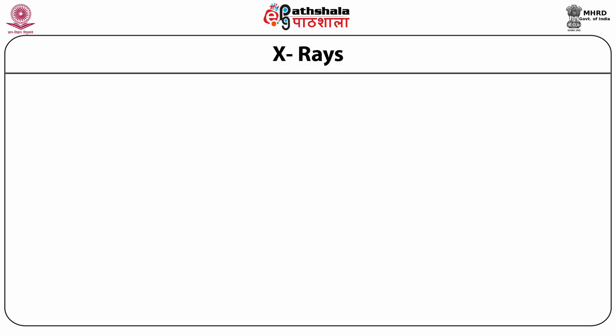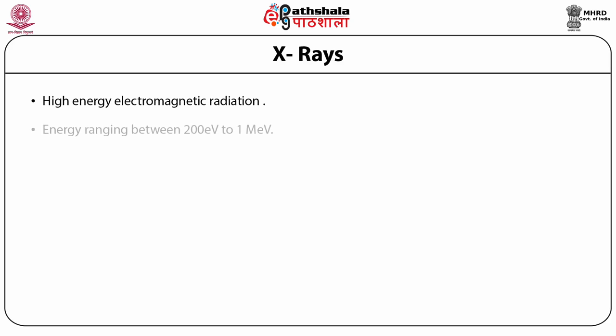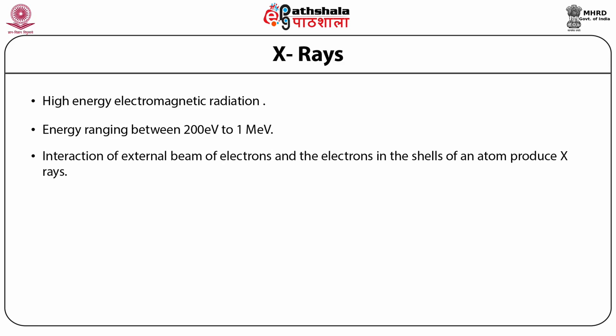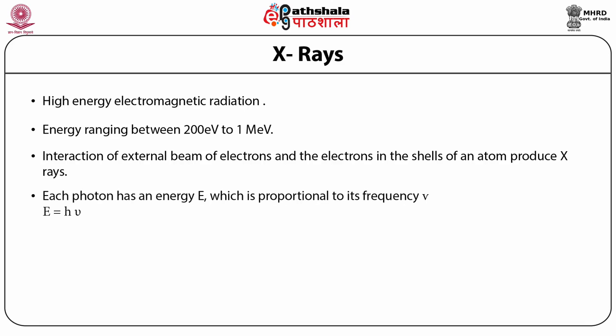Now we will discuss the characteristics of X-rays. X-rays are high-energy electromagnetic radiation with energies ranging between 200 electron volts to 1 MeV. Therefore, these rays lie between gamma and UV rays in the electromagnetic spectrum. Interaction of an external beam of electrons with the electrons in the shell of an atom produces X-rays. Each photon has an energy E proportional to its frequency ν, so E = hν, where h is Planck's constant, with a value of 6.626 × 10⁻³⁴ joule·seconds or 4.136 × 10⁻¹⁵ electron volt·seconds.